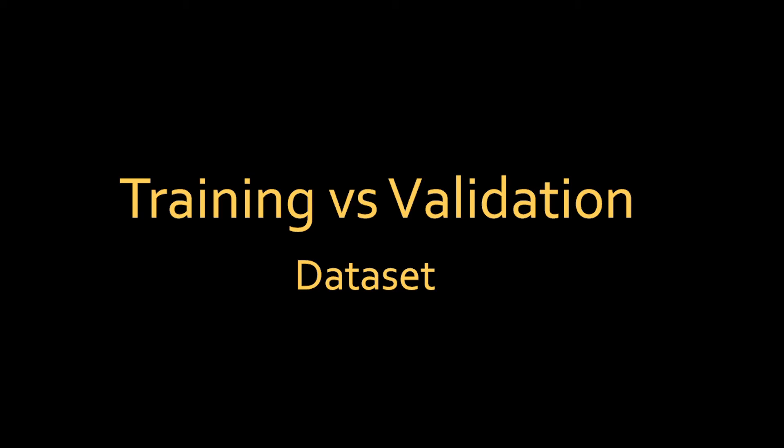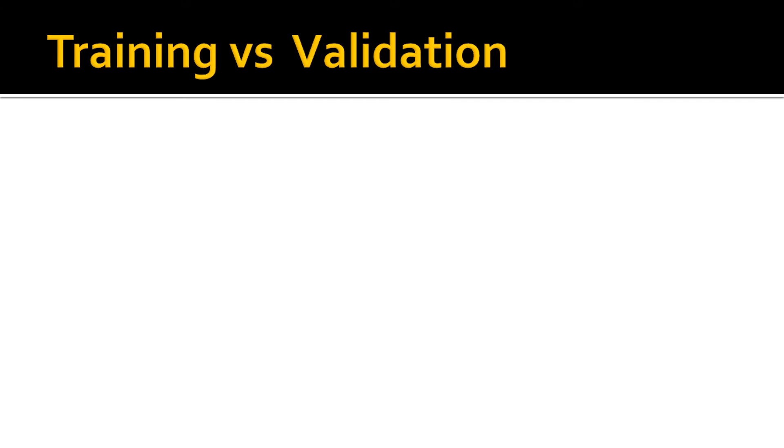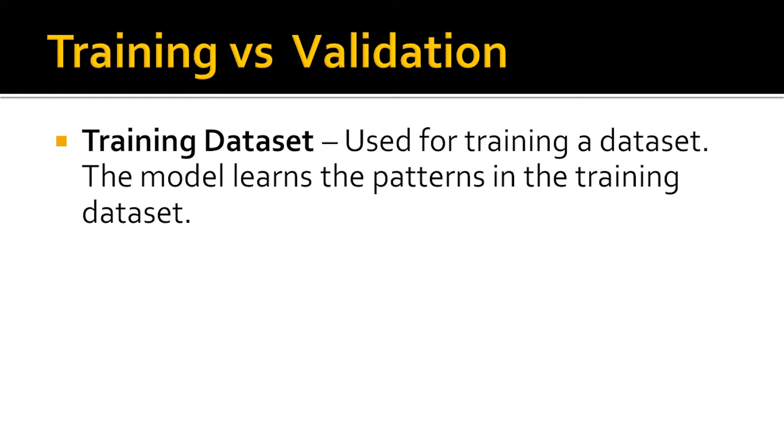In this video, we'll learn the difference between training and validation datasets. In machine learning, the main purpose of the training dataset is to learn the patterns in that dataset. The model learns each and every pattern in the data.